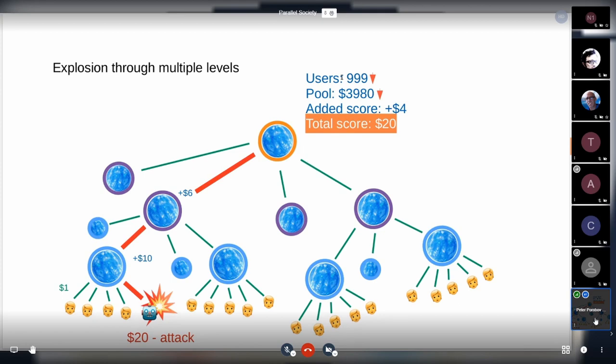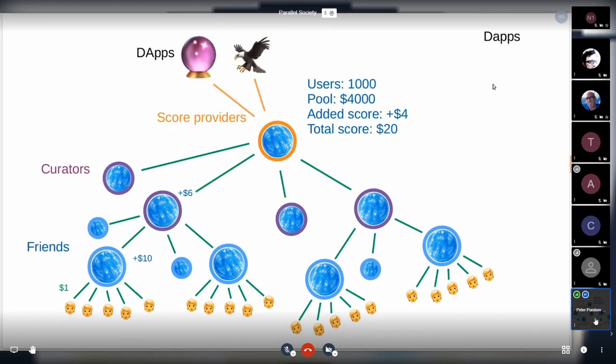How can apps benefit from that? The top level groups may gather a lot of users, that means they can act as score providers. They provide scores to the apps and they may require a fee from the apps.